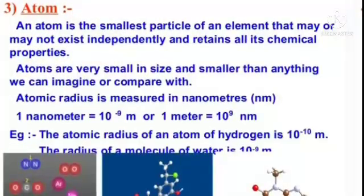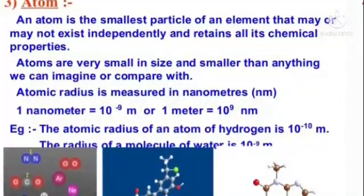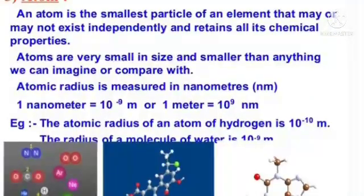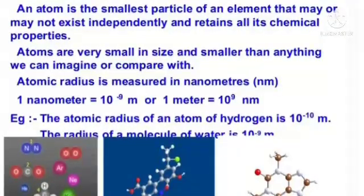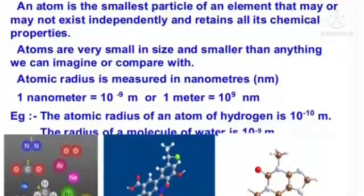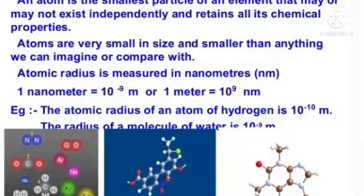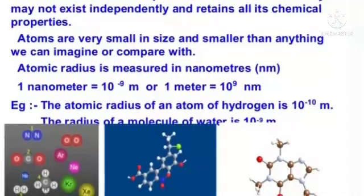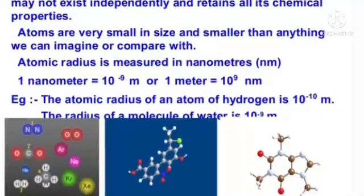An atom is the smallest particle of an element that may or may not exist independently and retains all its chemical properties. Atoms are very small in size, smaller than anything we can imagine or compare with. Atomic radius is measured in nanometers; one nanometer is equal to 10⁻⁹ meters. For example, the atomic radius of hydrogen is 10⁻¹⁰ meters, and the radius of a water molecule is 10⁻⁹ meters.